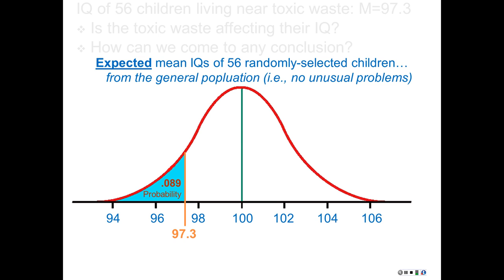It turns out that probability is 0.089, so 8.9%. If we just sampled 56 children randomly from the population of people who have no brain damage, who don't live near toxic waste, about 1 in 10 times — a little less than that — so 8.9% of the time we would expect that the mean IQ of those 56 children would be 97.3 or lower. So there you go — there's probability.